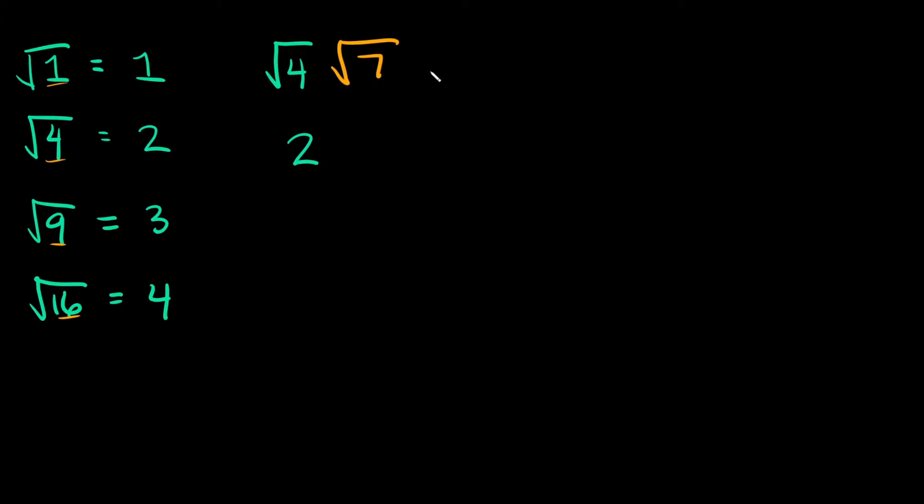Another one that I know that is pretty close to it is the square root of 9, which is 3. I know the square root of 7 must be somewhere between 2 and 3. If I was trying to estimate what the square root of 7 is, I would say it's somewhere between 2 and 3. If you wanted to get any more accurate than that, you'd probably have to use a calculator.